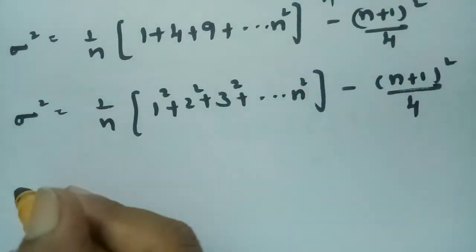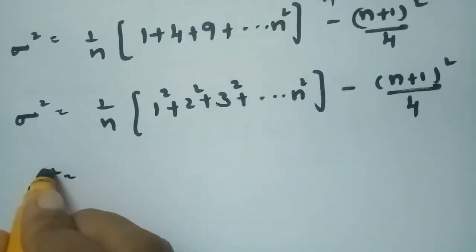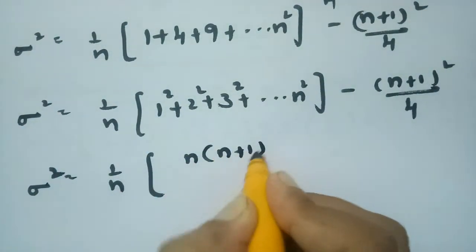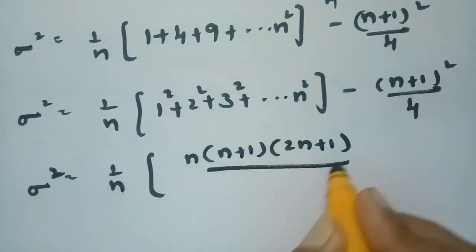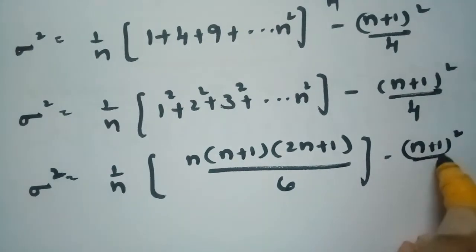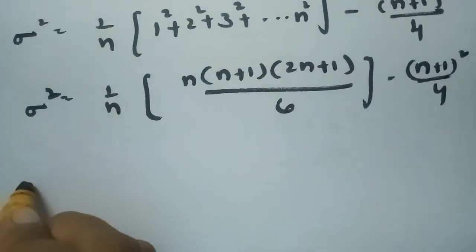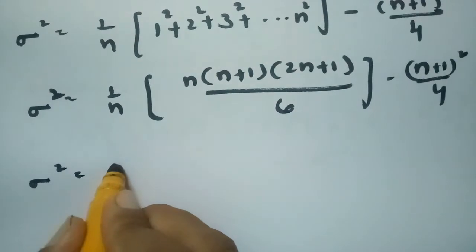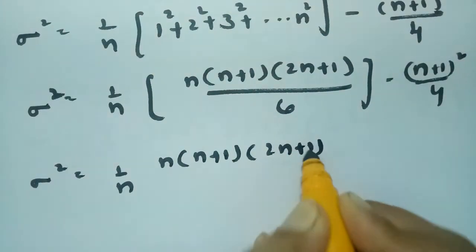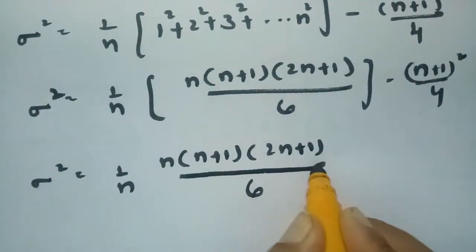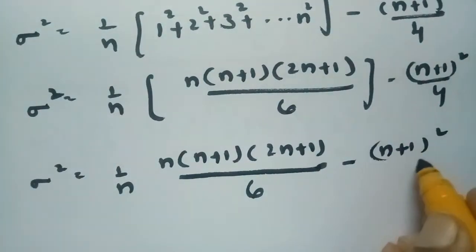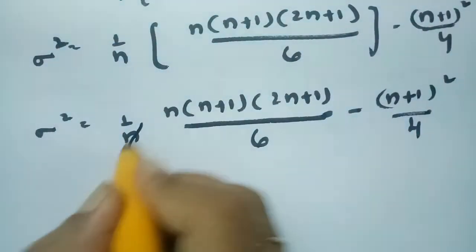The sum of squares of n terms has the formula n(n+1)(2n+1)/6. So σ² = (1/n) · [n(n+1)(2n+1)/6] − (n+1)²/4. Cancelling n from the first term, this becomes (n+1)(2n+1)/6 − (n+1)²/4.